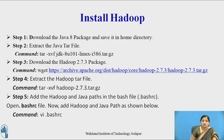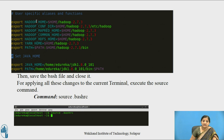Now let's see how to install Hadoop. Initially, we download the Java 8 package and save it in the home directory. We extract the Java tar file using the tar command. Then we download the Hadoop 2.7.3 package using the tar command. Then we add Hadoop and Java paths in the bash file, that is .bashrc. Then save the bash file and close it.